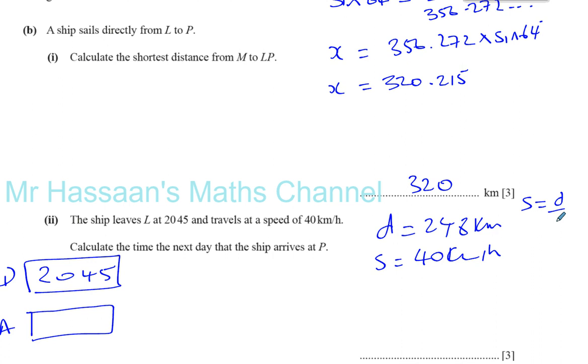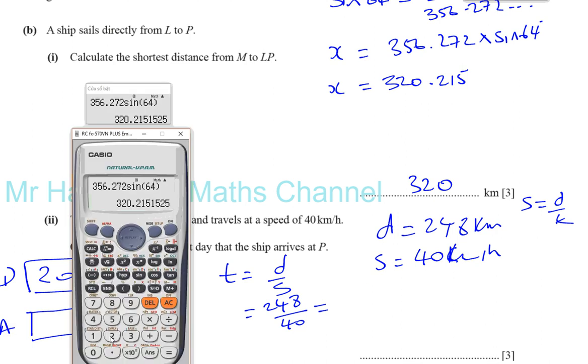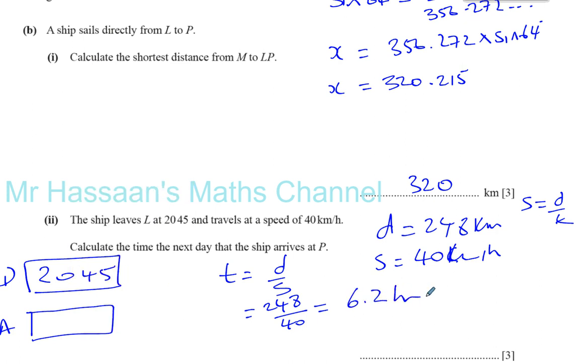We know speed equals distance over time. So we know that time is equal to distance over speed. So you've got the distance, which is 248, over the speed, which is 40. Make sure that they're compatible. This is kilometers per hour, this is kilometers, that's absolutely fine. There's no issues with changing units there. The answer is going to come out in hours. So we've got 248 divided by 40, that gives us 31 over 5, which is 6.2. So that's 6.2 hours it's going to take.